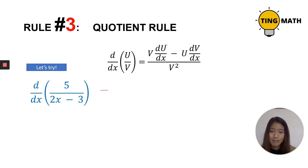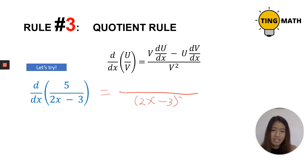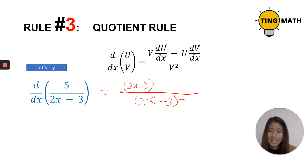Let's apply the rule with this example: 5 over (2x minus 3). That is a fraction, so we can use the quotient rule. I am going to use the denominator first — I'm going to square it. So I'll square it and copy the denominator up on top. Now when I differentiate 5, remember 5 is a constant, and the derivative of any constant is zero.